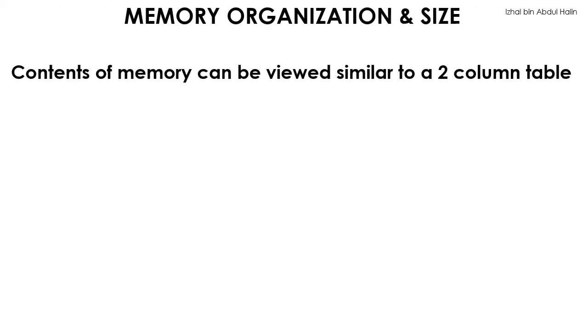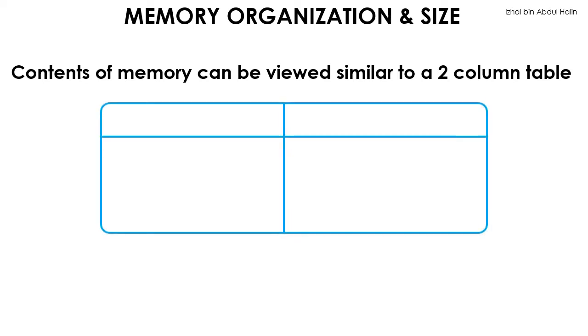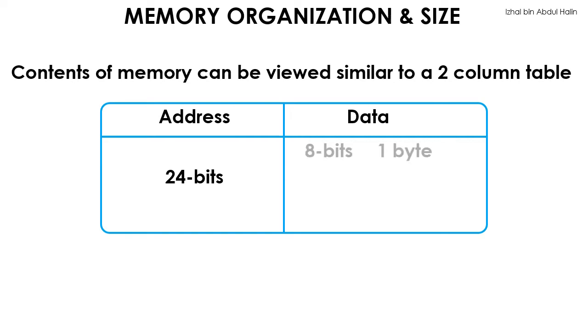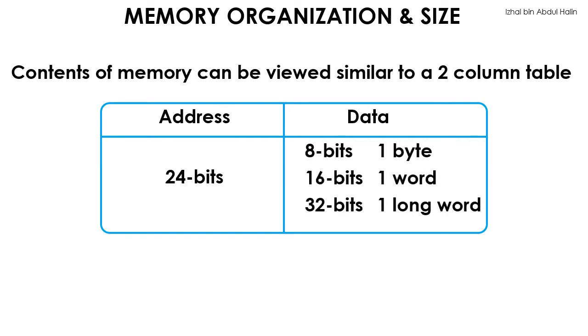The main function of the memory block in the 68k microprocessor is to store data, and it does this job in a very systematic manner. In order to understand memory, we can say that memory is organized like a two-column table: the first column is for address while the second column is for data. The address for a 68k microprocessor is 24 bits wide. Data, on the other hand, can be formatted to be either one byte, one word, or one long word in size.